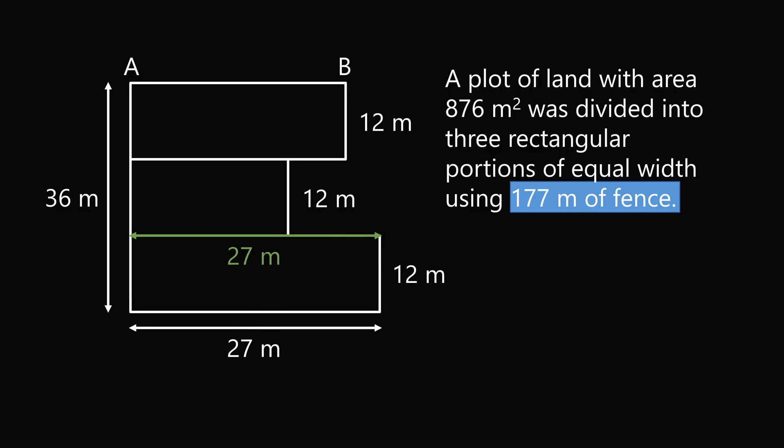The bottom length is equal to 27 meters so the other side of the rectangle will also be equal to 27 meters. Now, the top length is equal to AB so the other side of the rectangle will also have the same length of AB.